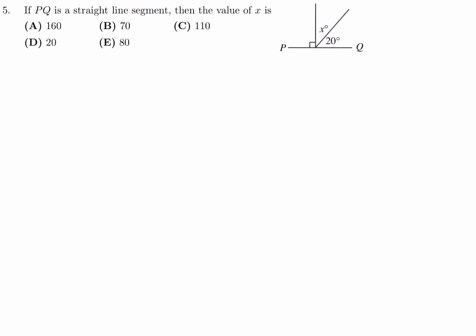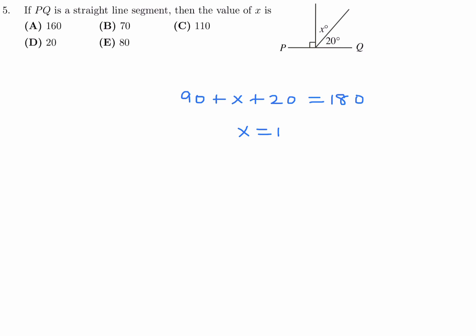If PQ is a straight line segment, then the value of X is. This symbol means 90 degrees. So if this is 90, this is 90 also, because PQ is a straight line, so this whole thing is 180. All of these angles have to add up to 180: this angle is 90, and then we have an X, and then we have a 20. All of that together is 180 degrees. So solving for this, X looks like 180 minus 110, and therefore X is 70 degrees.